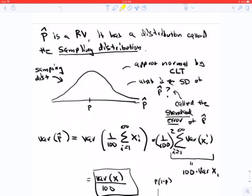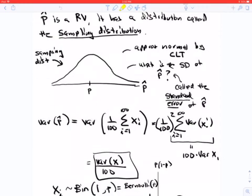And the center will be the expected value of p hat, which is p. And we need to find what the sd is for the sampling distribution. And we call that the standard error.